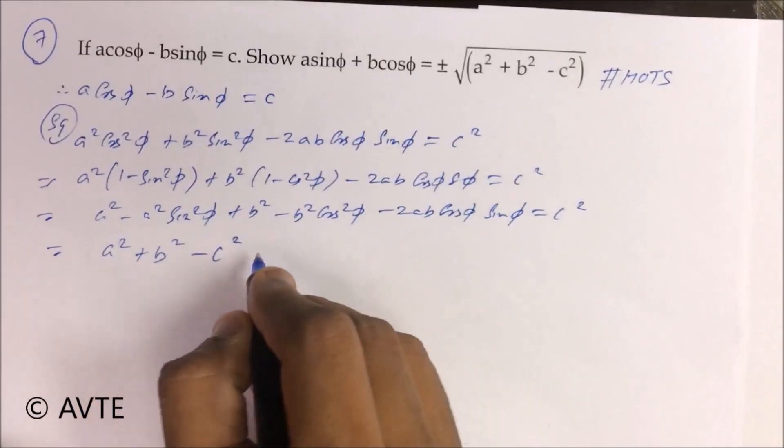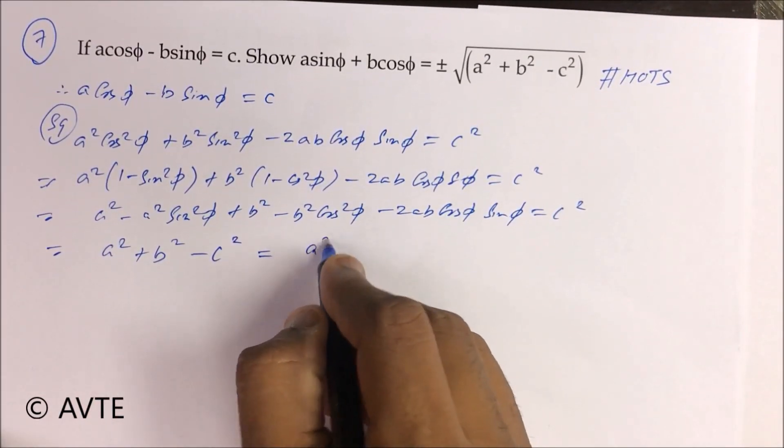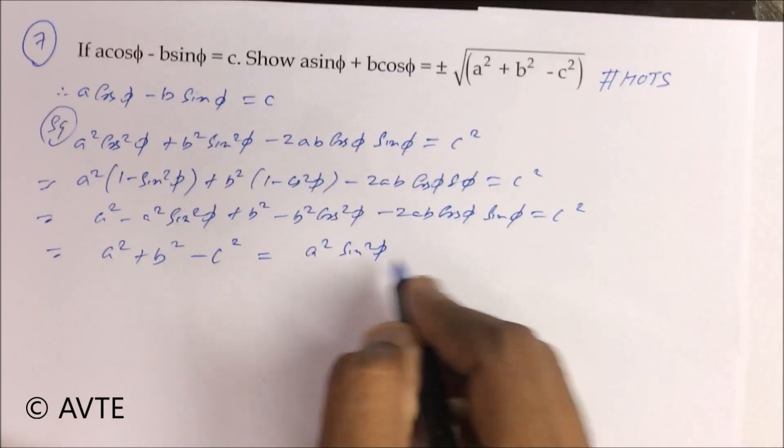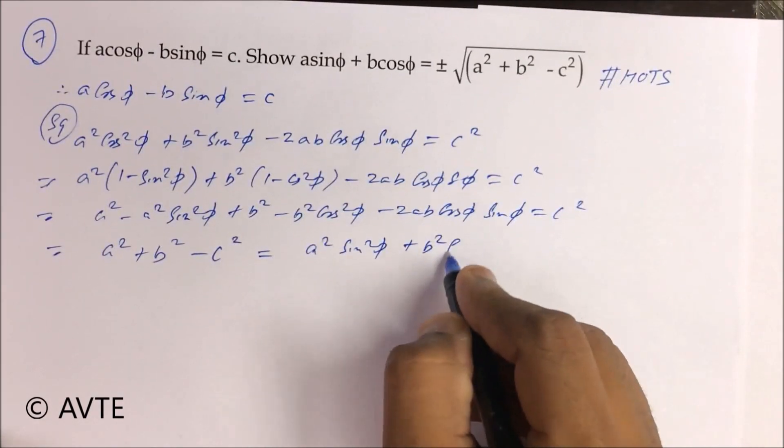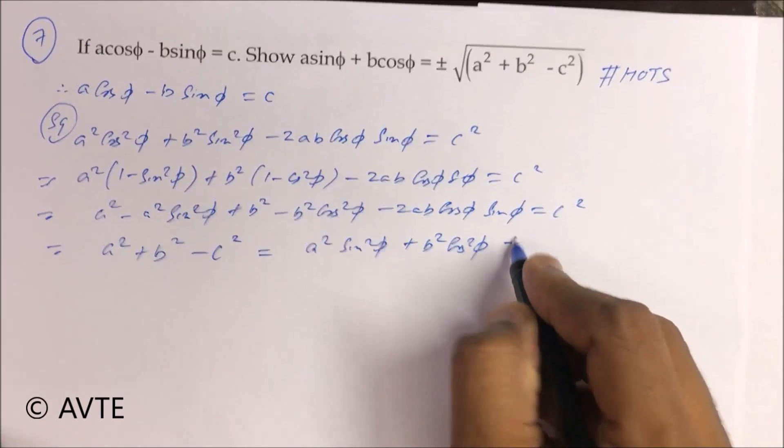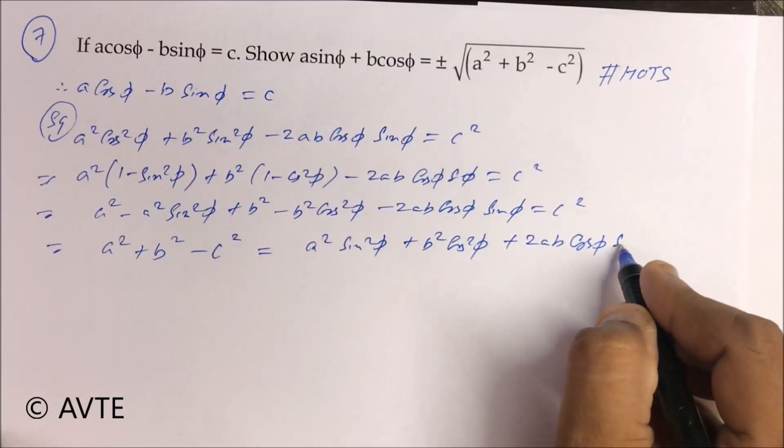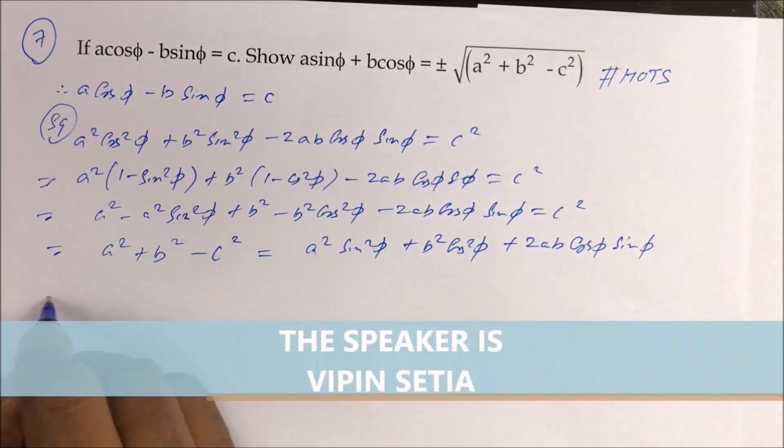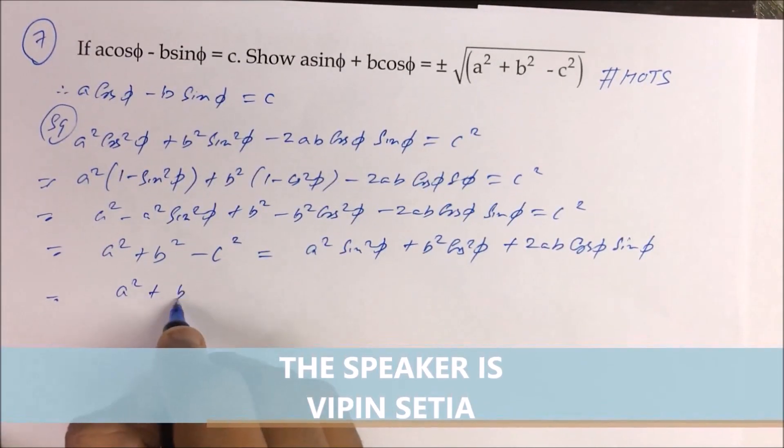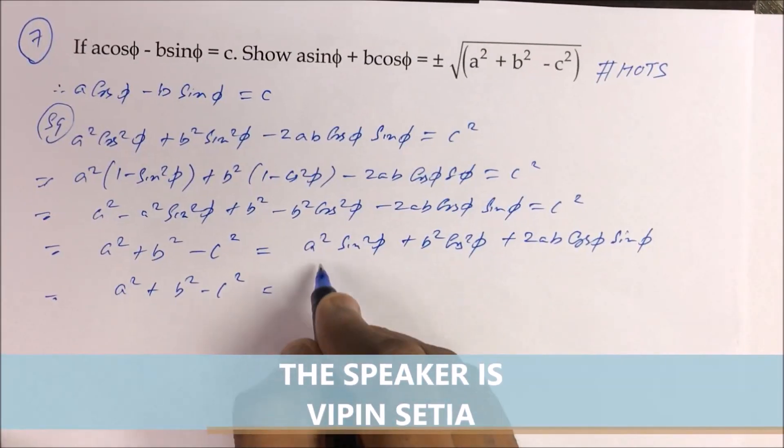Transform. You are left with A square sin square φ plus B square cos square φ plus 2AB cos φ sin φ. So guys, now you have, just check it down,